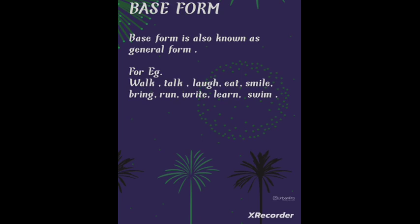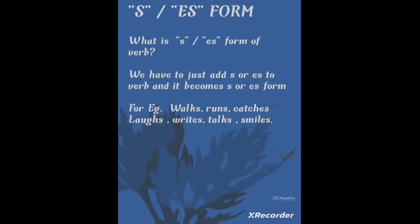For example: I like to walk, I like to talk, she likes to laugh, he likes to eat. Whenever we are speaking general things about anyone or about ourselves, we use the base form. I hope everyone has understood the base form — please write two examples of base form in the comment box.